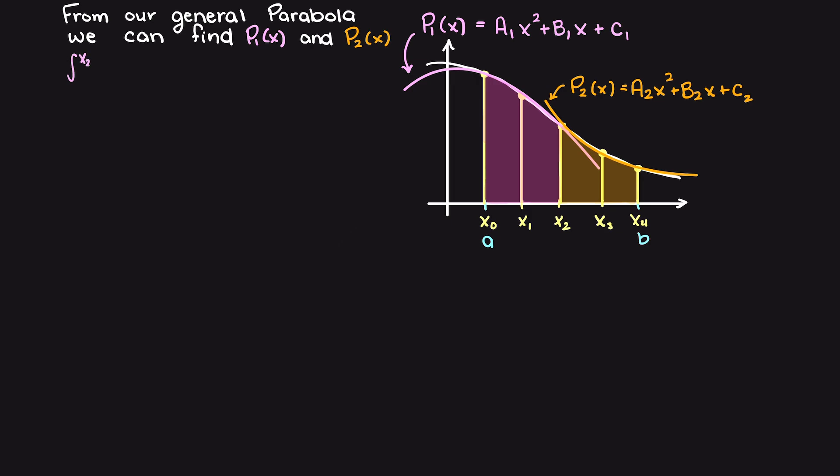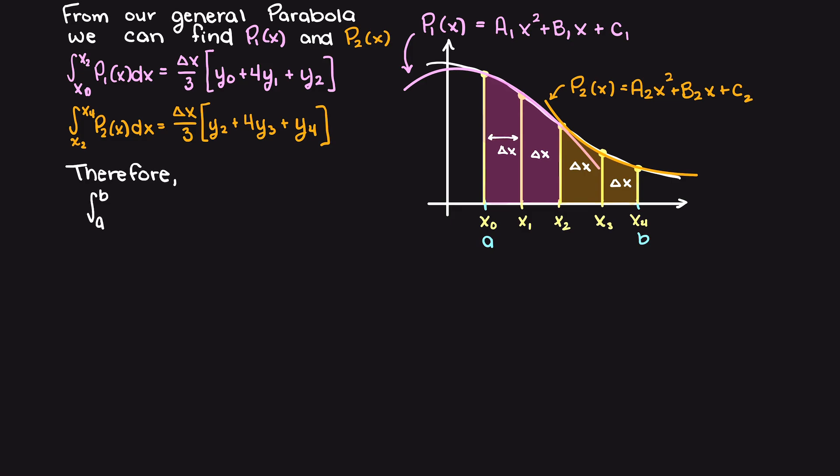Well, individually, as we have just seen, p1 has the formula delta x over 3 times y0 plus 4y1 plus y2. Then p2 has a formula of delta x over 3 times y2 plus 4y3 plus y4. Lastly, we can add together these two areas that p1 and p2 are finding, much like we did with Riemann sums in the trapezoid rule.